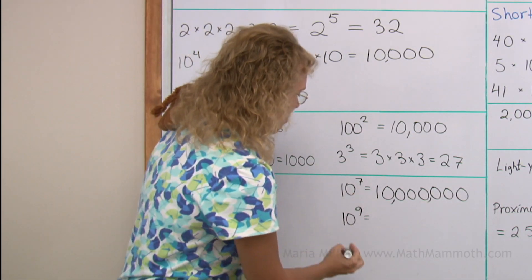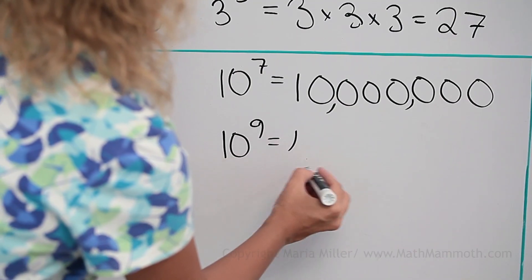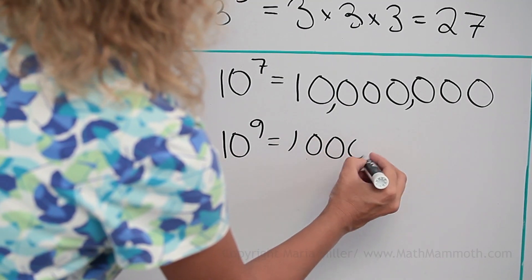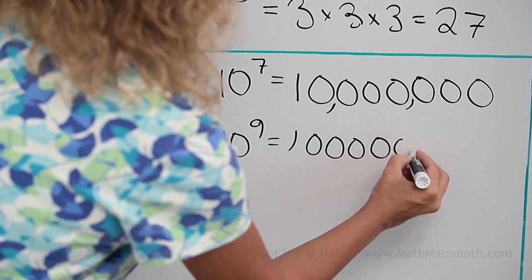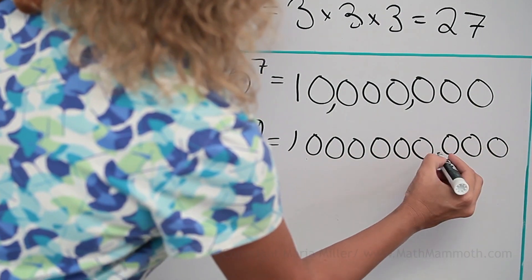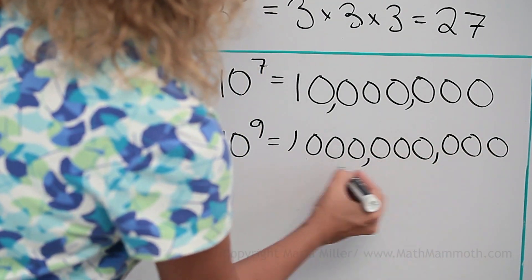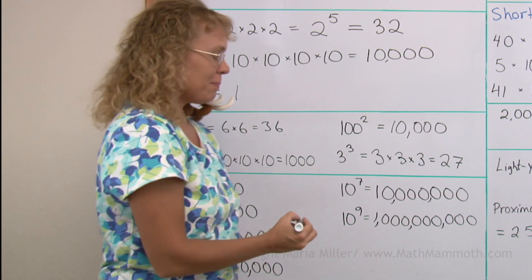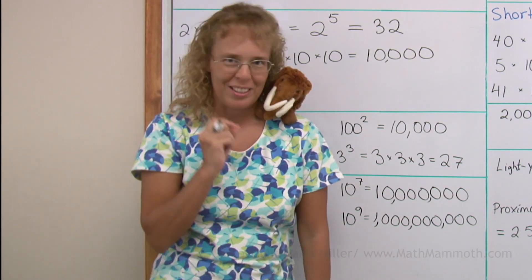10 to the ninth power is 1 followed by 9 zeros: 1, 2, 3, 4, 5, 6, 7, 8, 9. Adding commas, what do we get? 1 billion.